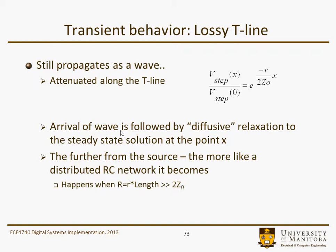The model is that of an arrival of a wave followed by diffusive relaxation to a steady state solution at some point x — eventually it's going to get to the value that you put on the input. The further from the source, the more it looks like an RC network. This happens when R — the resistance per unit length times the length — is considerably greater than 2·Z₀.